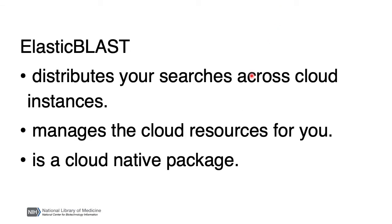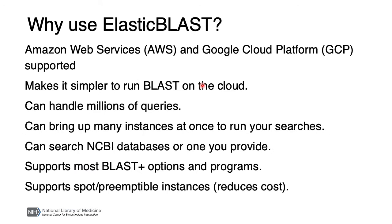Elastic BLAST starts cloud instances or machines and populates them with a database and software, and queues searches to them. The search is run there and not on your local machine. It manages the resources so the instances are shut down when your searches are done. Your results are saved in cloud buckets, which is just an area on the cloud you can store files in. For Elastic BLAST, we've used services like Kubernetes or AWS Batch that are maintained by the cloud provider. There are a lot of reasons to use Elastic BLAST, but I want to emphasize that it makes it relatively simple to run your BLAST searches on the cloud and do it efficiently.